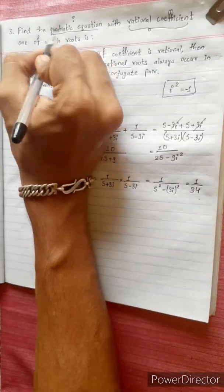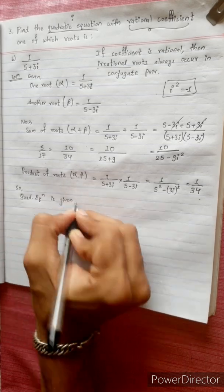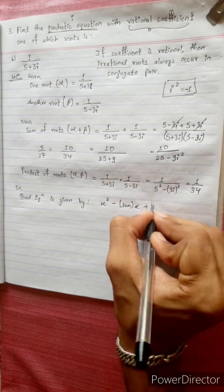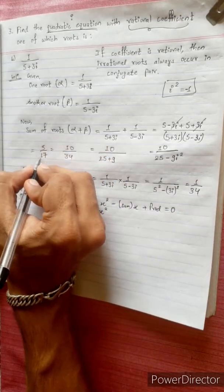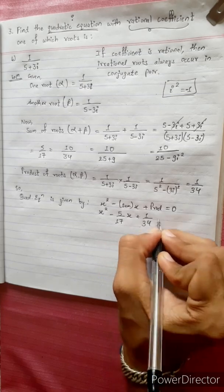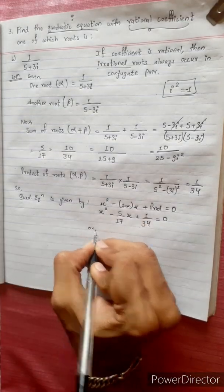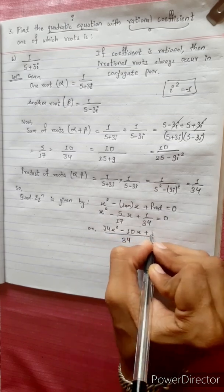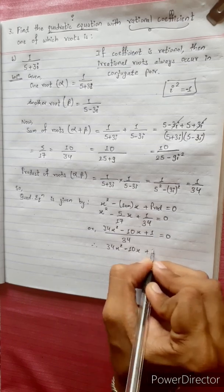This is the quadratic equation. The quadratic equation is given by the formula: x² minus (sum of roots)x plus (product of roots) equals 0. Sum of roots equals 5/17, product of roots equals 1/34. Multiplying through by 34: 34x² minus 10x plus 1 equals 0.